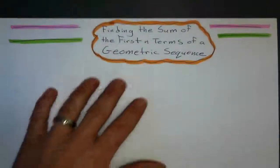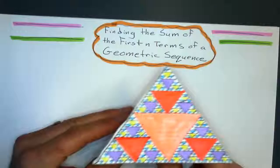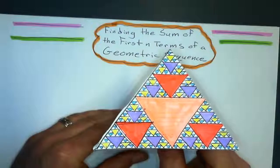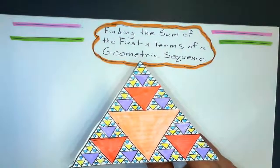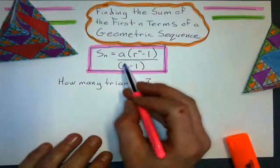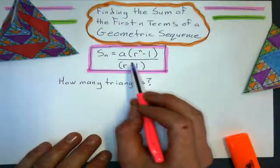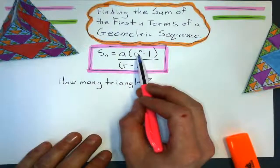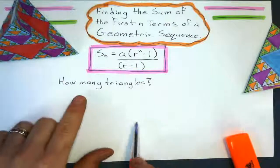If I want to figure out the sum of the first n terms of a geometric sequence — like how many triangles are in this Sierpinski triangle pattern — we are going to use a formula for this. Our formula: a is still going to be the first term, r is still going to be the common ratio, and n is still going to be the number of terms, or which term I am figuring out.